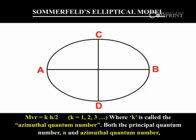That is, mvr is equal to k times h by 2π, where k is equal to 1, 2, 3, and so on. Here, k is called the azimuthal quantum number.